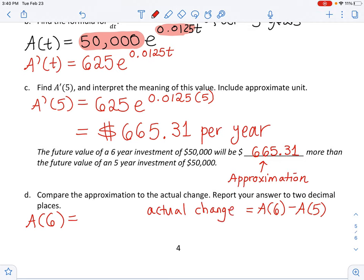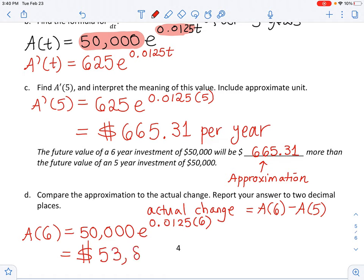Hold on. So let me go ahead and find A of 6 first. What is A of 6? I need to plug in 6 into the amount function. 50,000 times e raised to the 0.0. Oh no, battery is low. 1, 2, 5. I got distracted, so I almost gave them a 12.5% interest rate instead of 1.25% to the 6th power. Okay, let's plug in 50,000 times e raised to the 0.0125 times 6. That comes out to be $53,894.21.